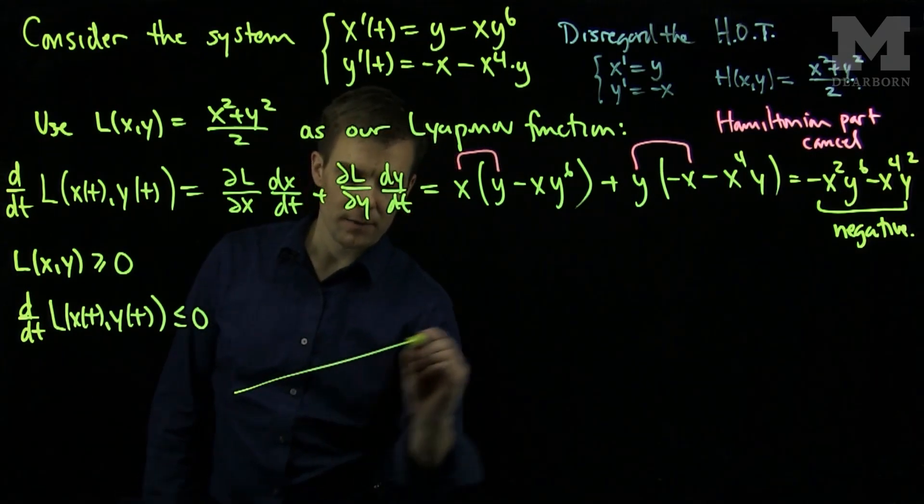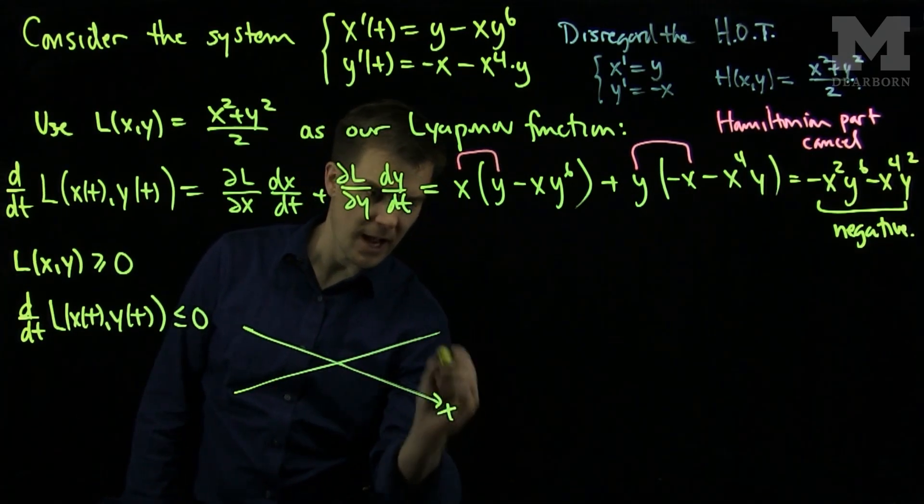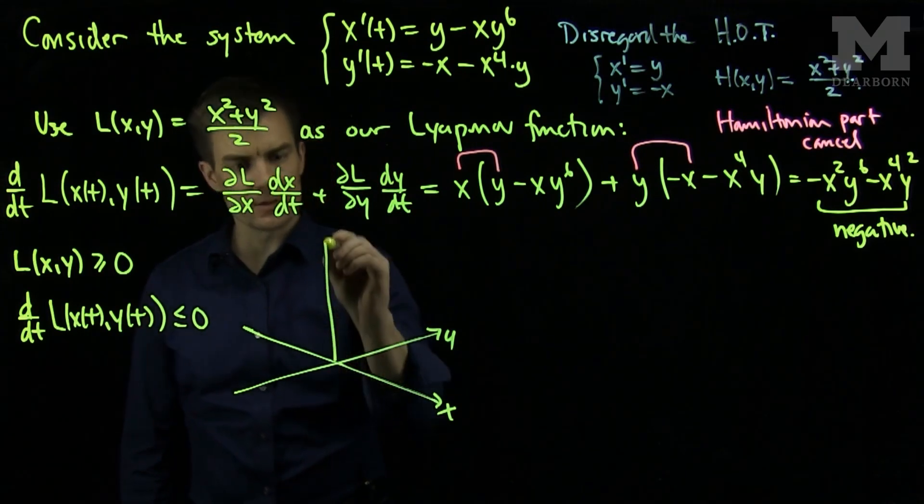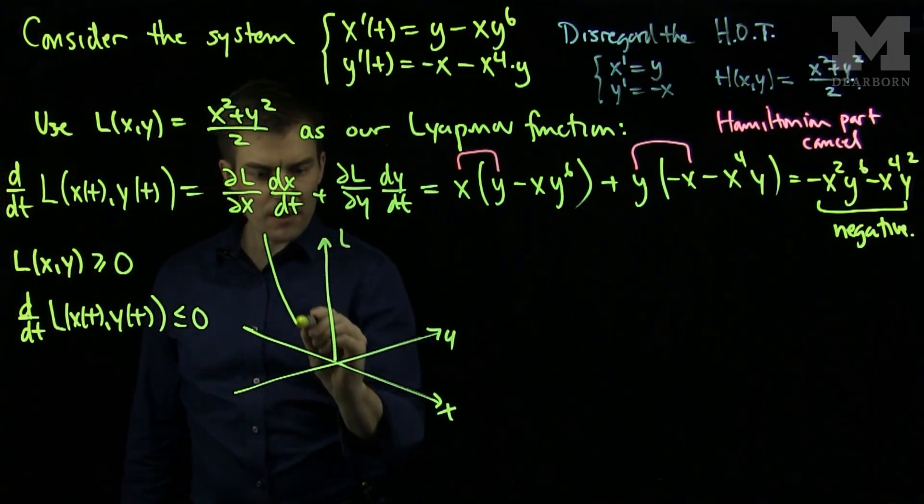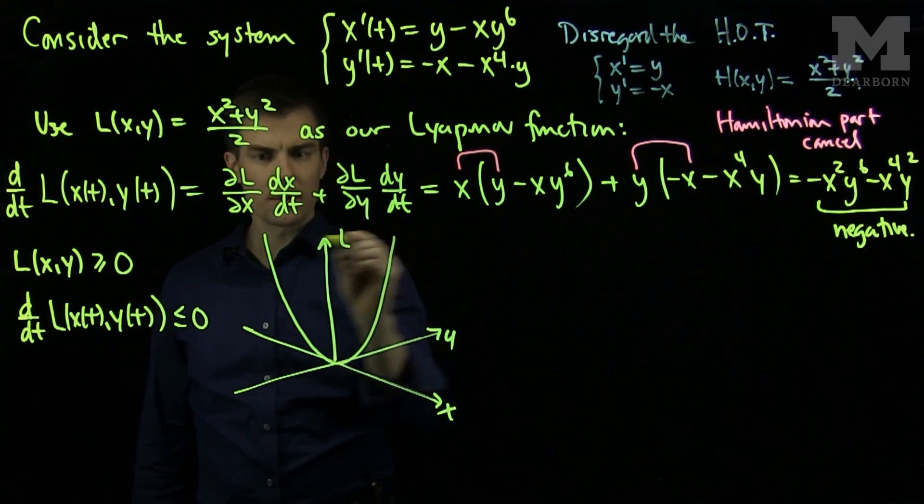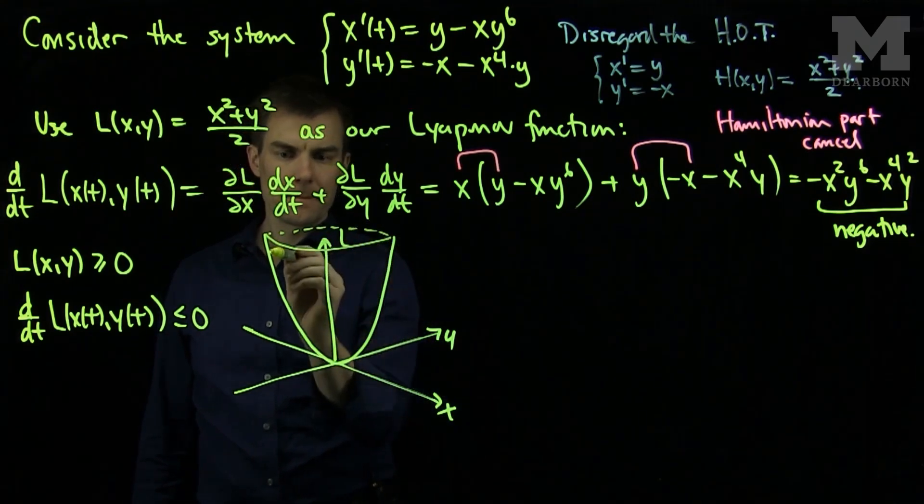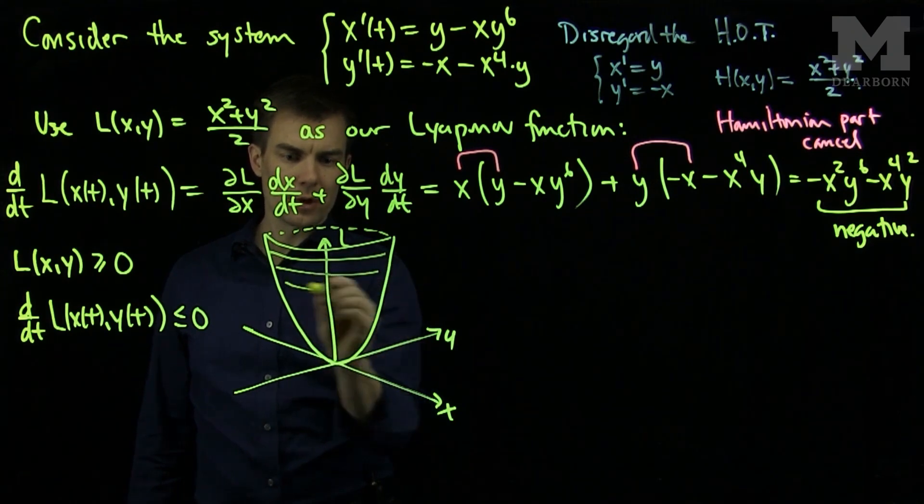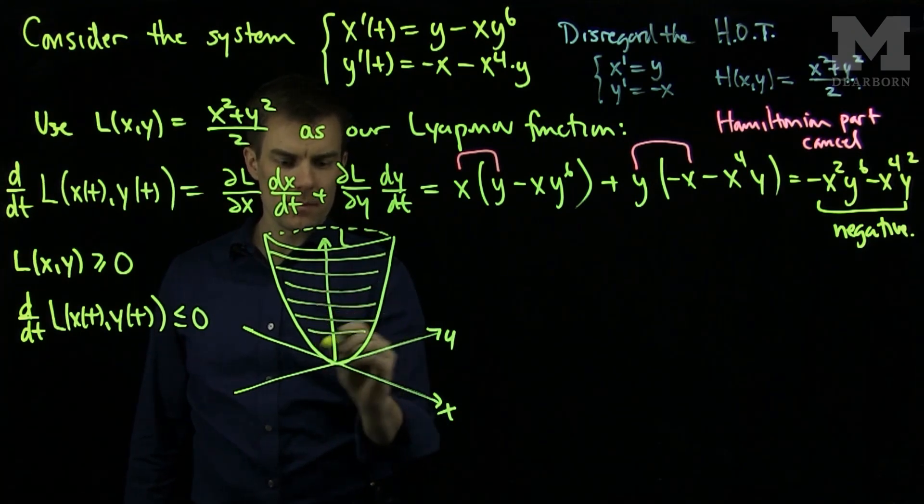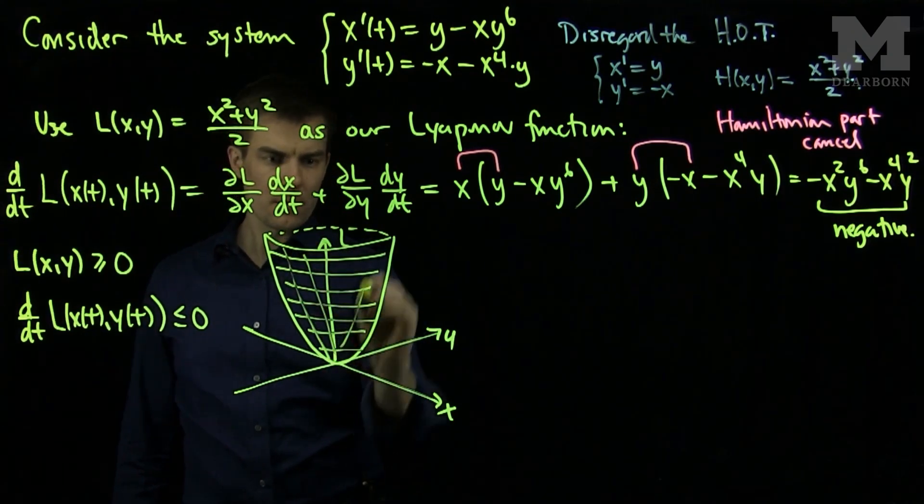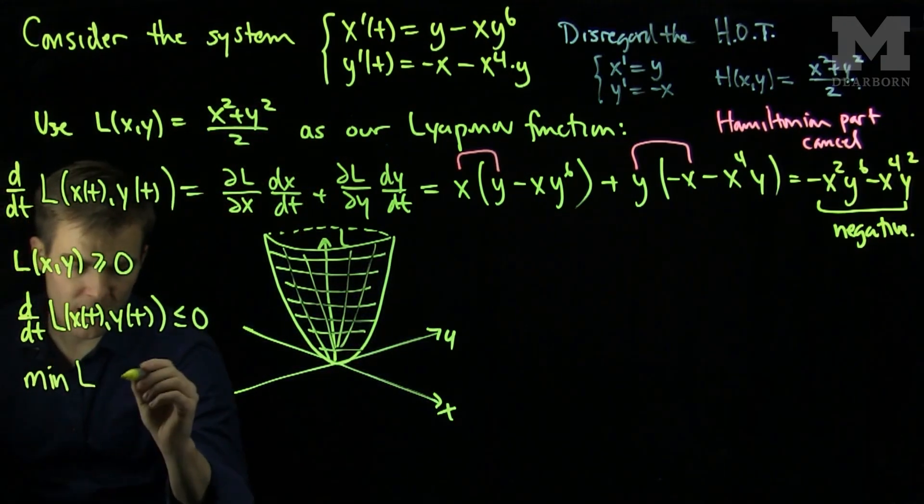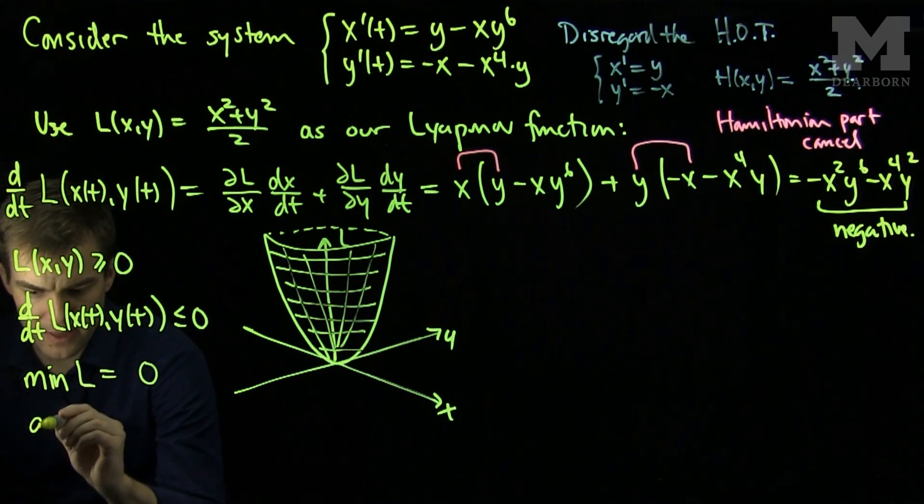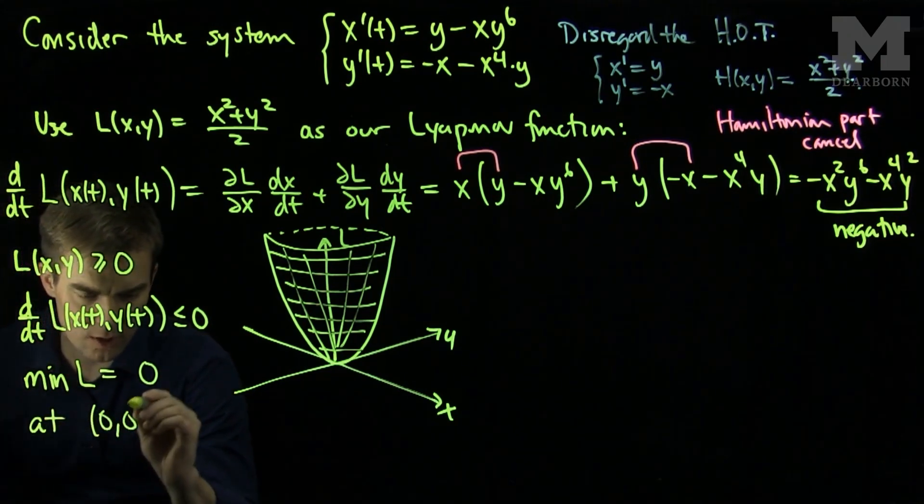Now, we can sketch the graph of L. Here's x, and here's y, and here's the z-axis, which we will call the L-axis. L is a paraboloid with an absolute minimum at the origin. So the minimum of L is zero, and that occurs at zero, zero.